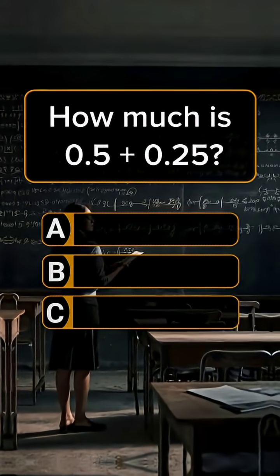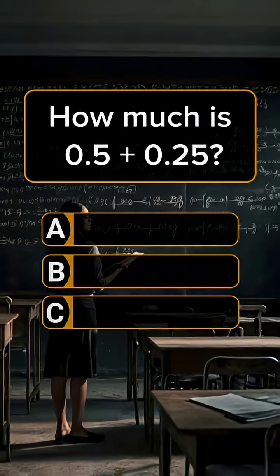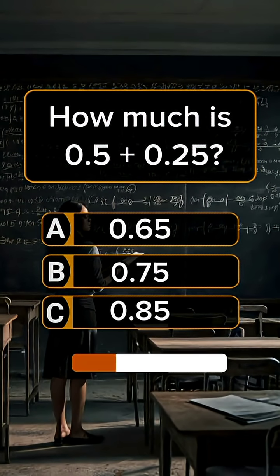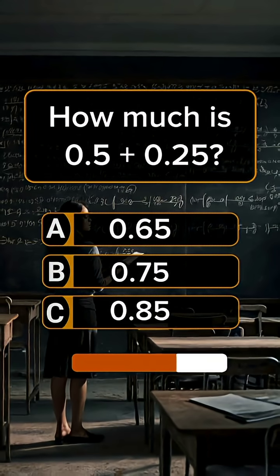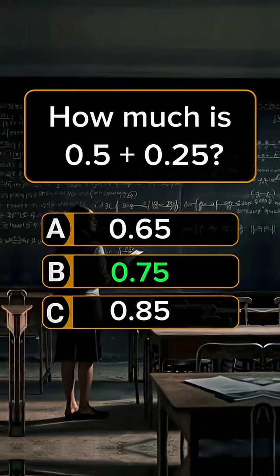Question 3. How much is 0.5 plus 0.25? Answer B, 0.75.